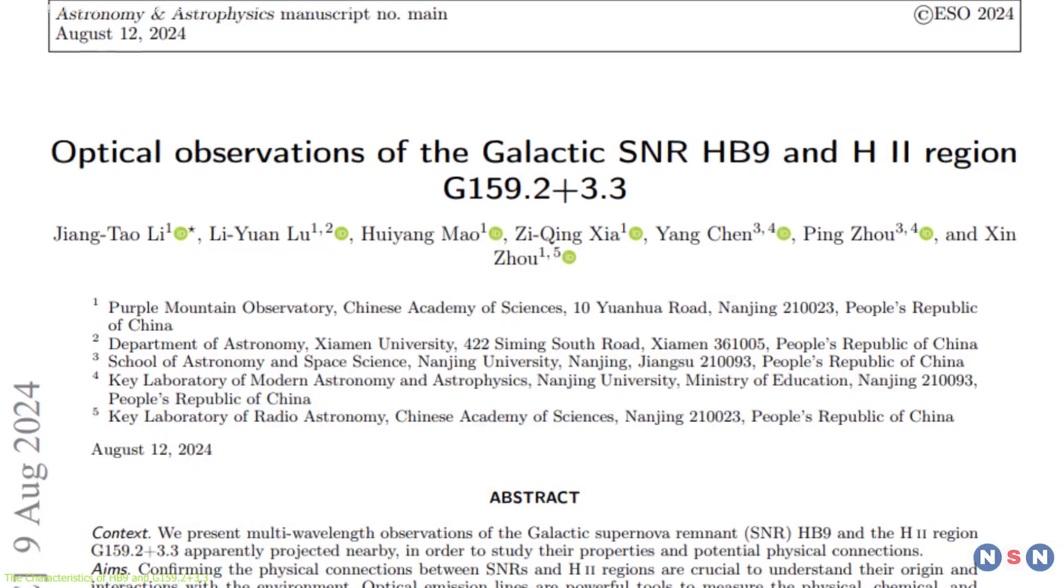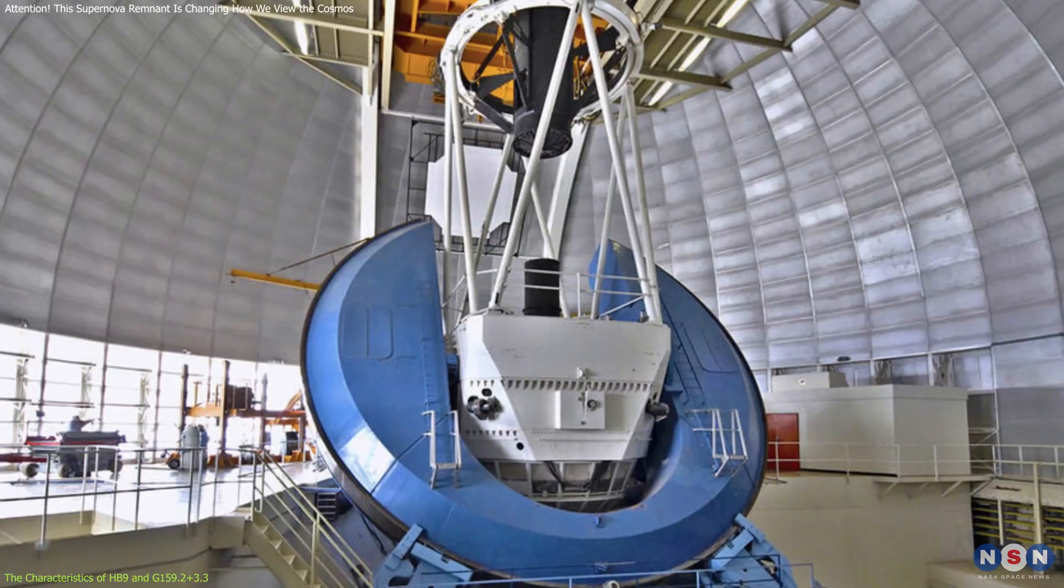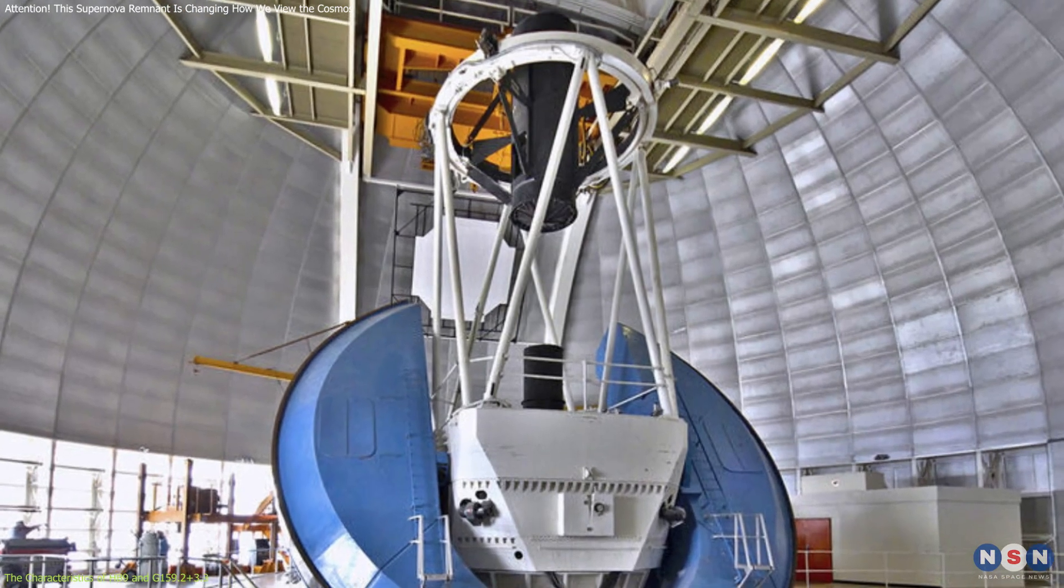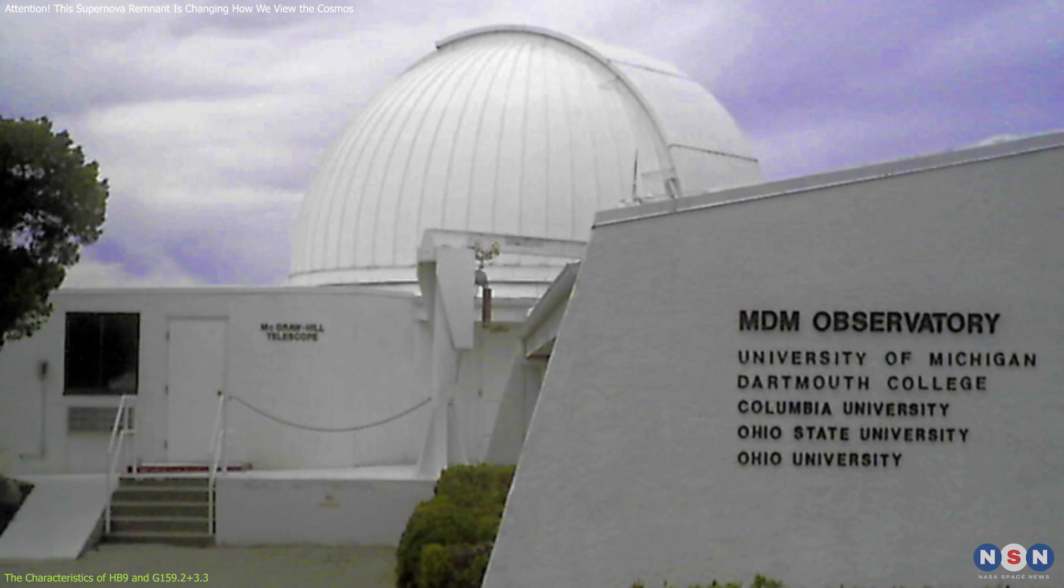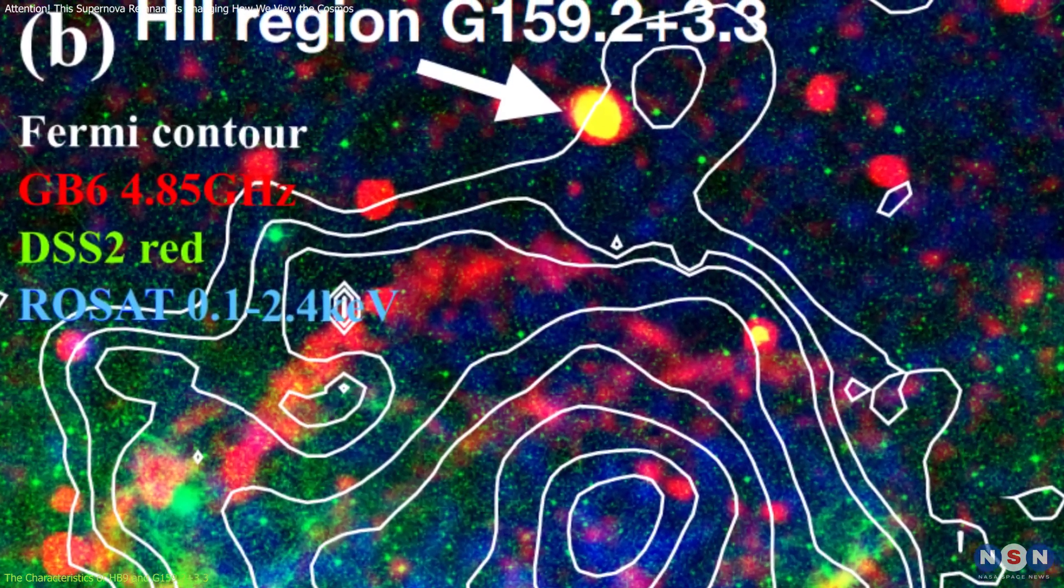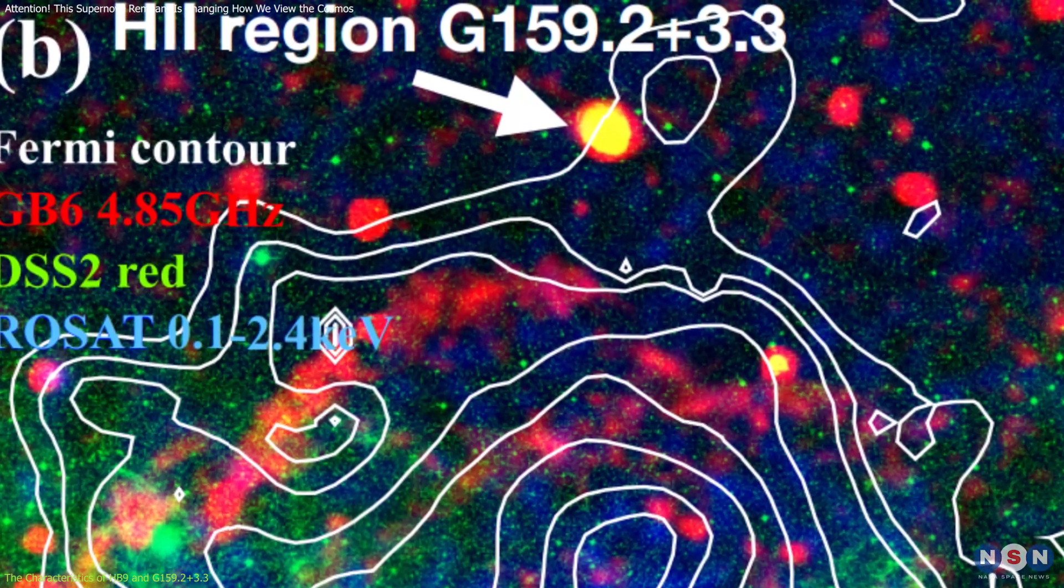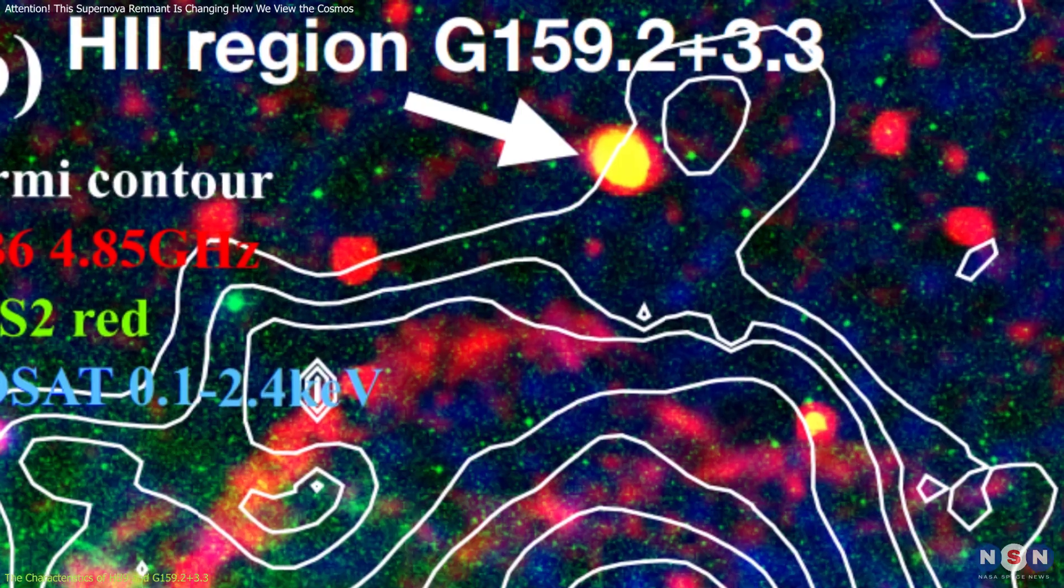In the recent study led by astronomers from the Purple Mountain Observatory in Nanjing, China, the researchers employed the McGraw-Hill 1.3M telescope at the Michigan-Dartmouth-MIT MDM Observatory. Their goal? To determine whether Hb9 and the H2 region were truly connected, or just an optical illusion caused by their positions in the sky.